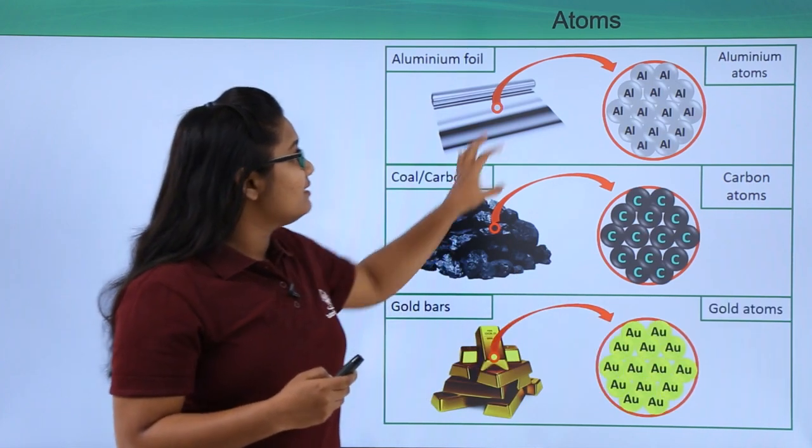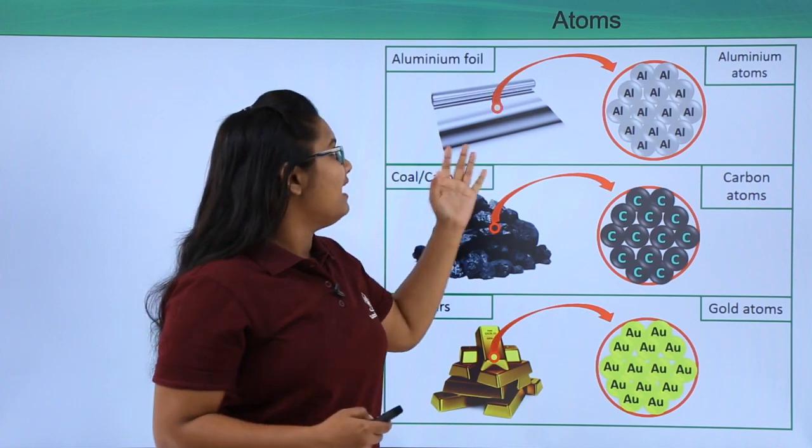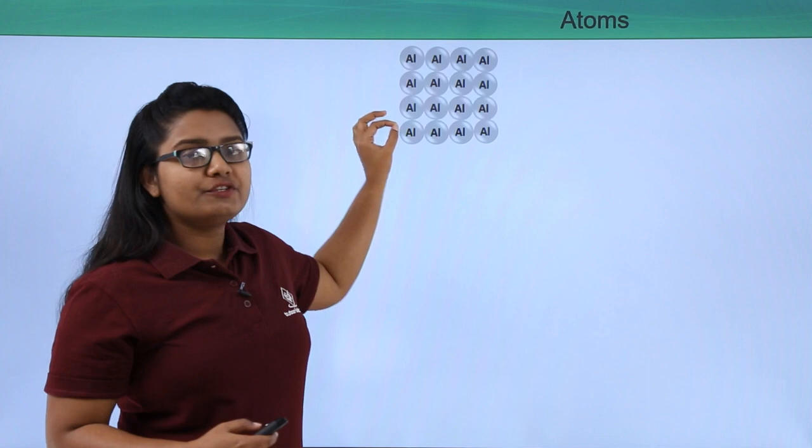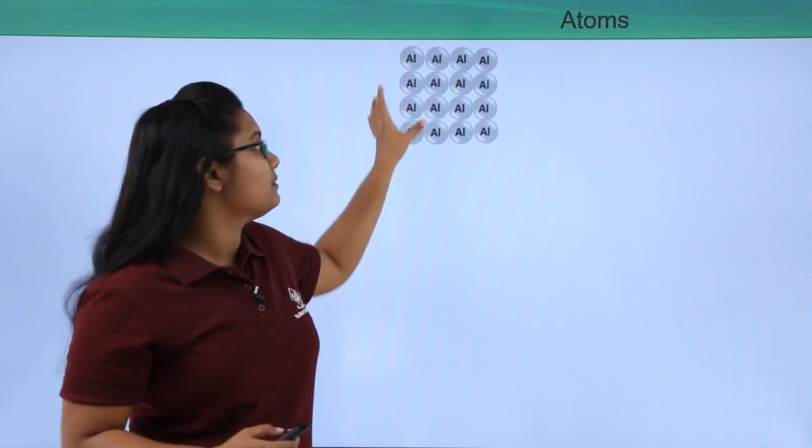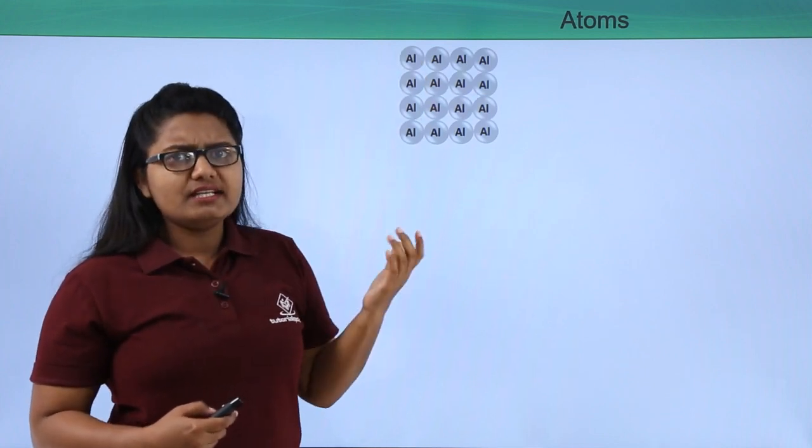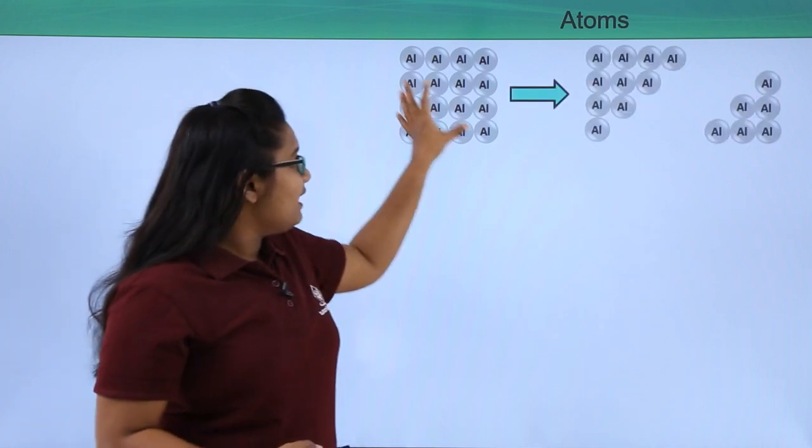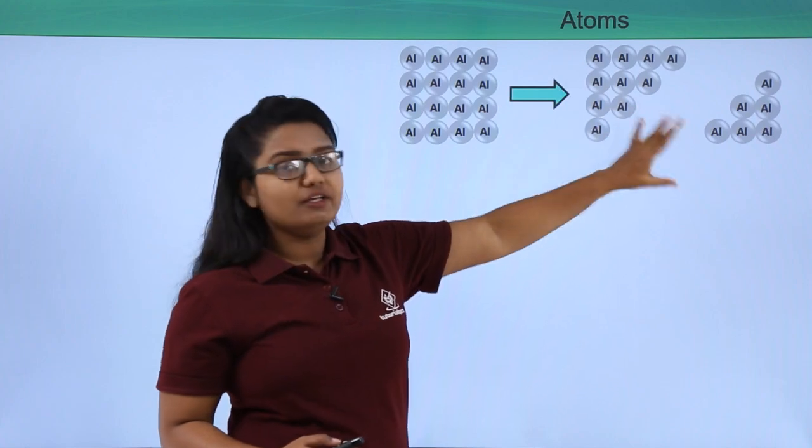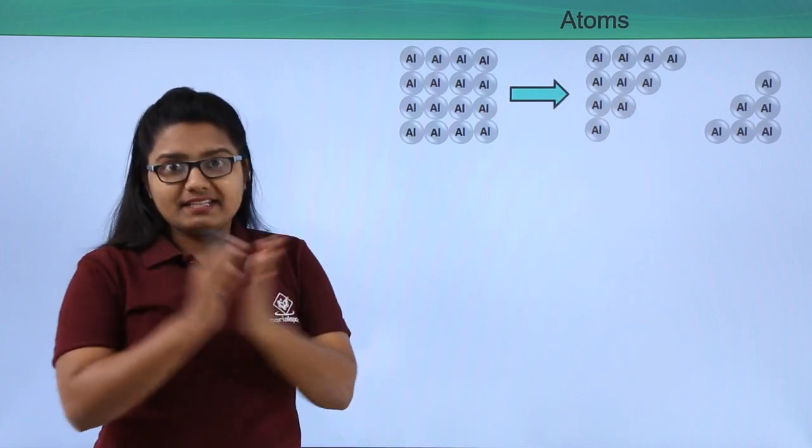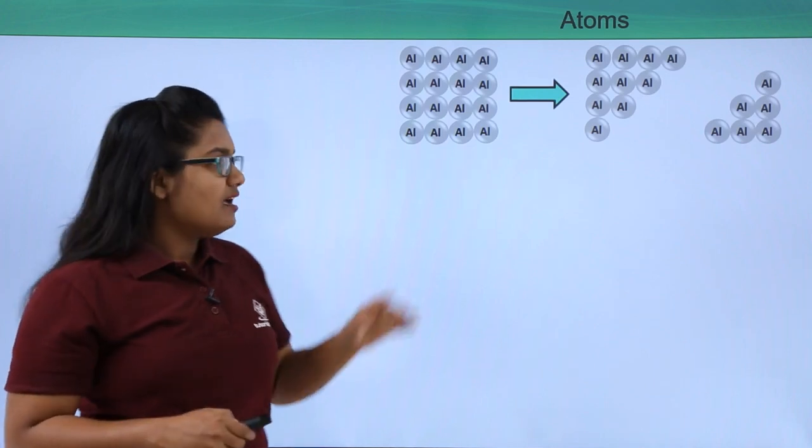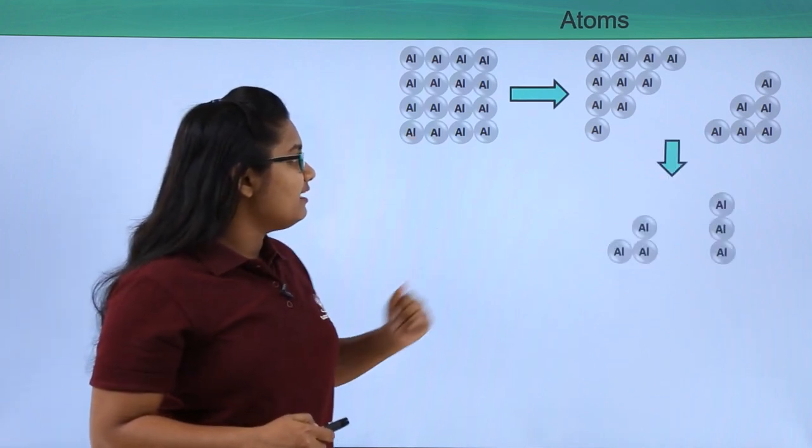Let us look at this aluminum foil in detail. Aluminum foil, as I said, a small portion of aluminum foil was made up of a bunch of aluminum atoms. Let us try to break this piece of aluminum. When we break it, we have two smaller pieces of aluminum, but still it is aluminum. It has not transformed to something else.